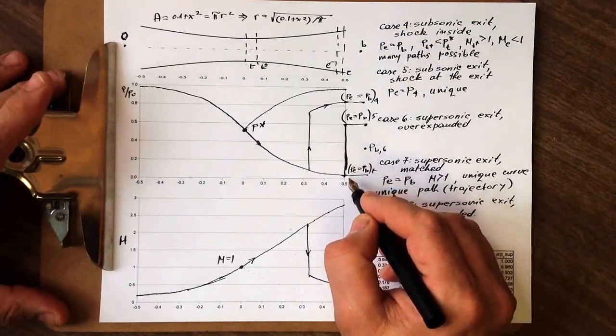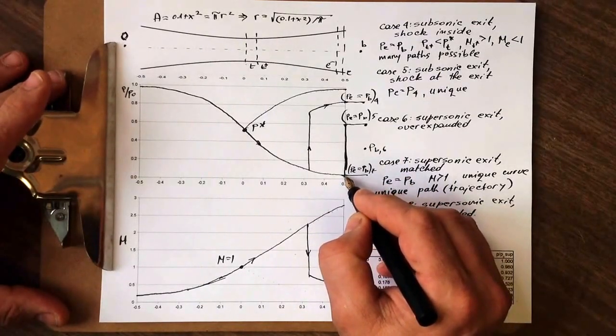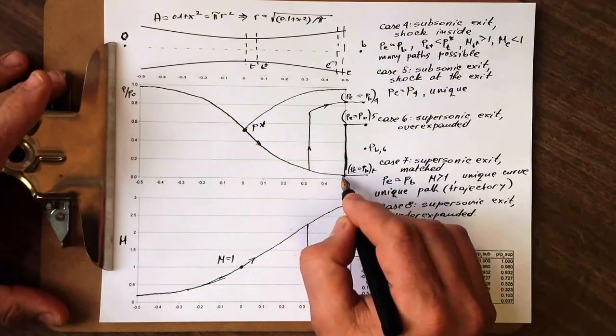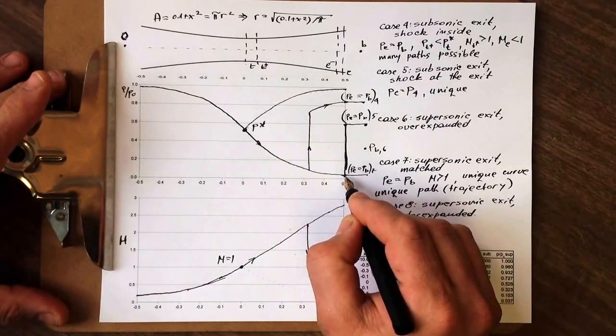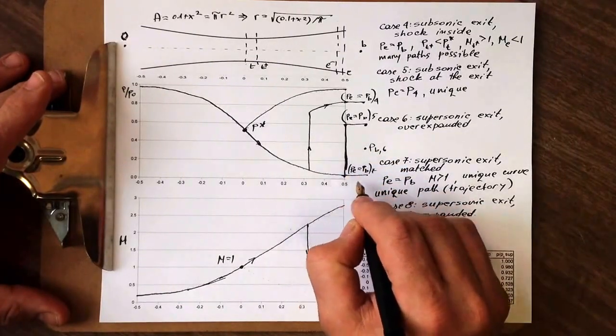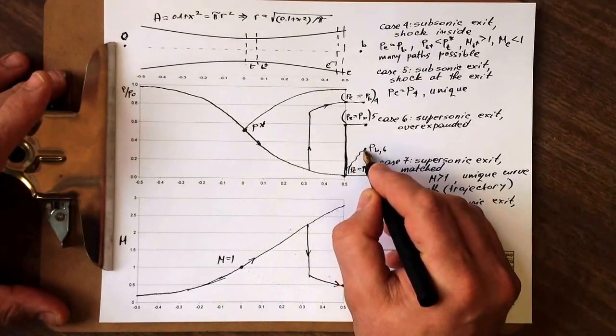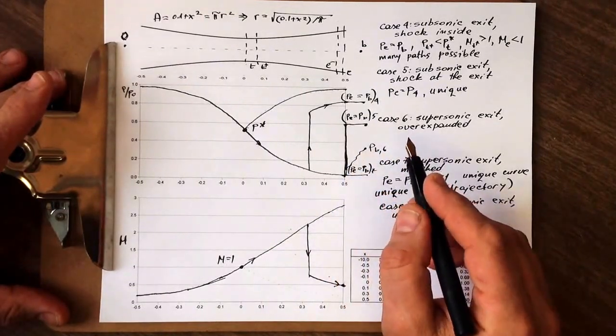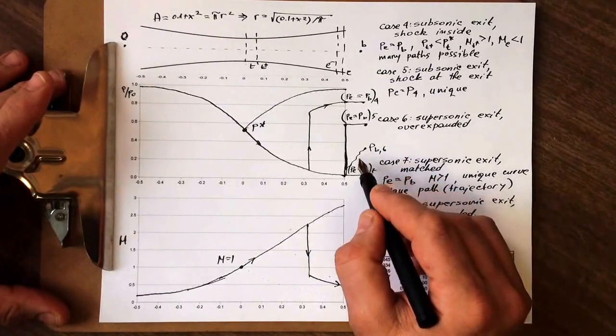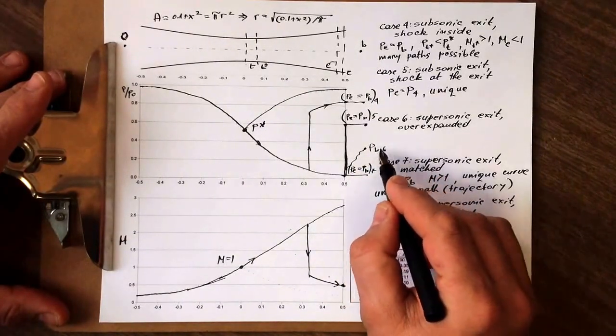There's not going to be any change here, so the jet will still come out at a supersonic speed, same one as would be in case 7. But rather than smoothly going out, it will basically undergo through a series of shockwaves to increase its pressure back to B6.